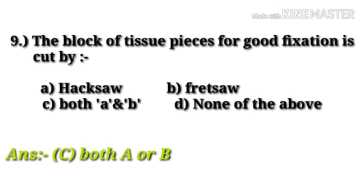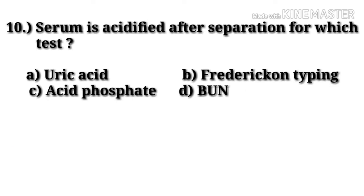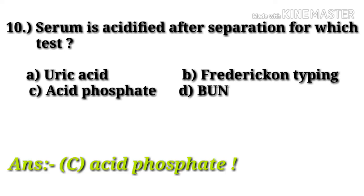Question number 10: serum is acidified after separation for which test? Option A: uric acid, option B: blood group typing, option C: acid phosphatase, option D: bence-jones acid phosphatase. Option C, acid phosphatase, is the correct one.